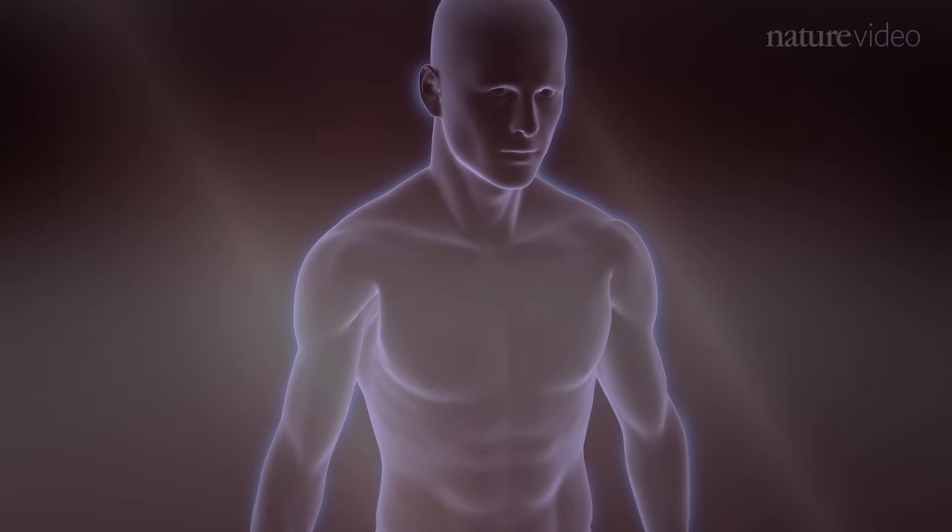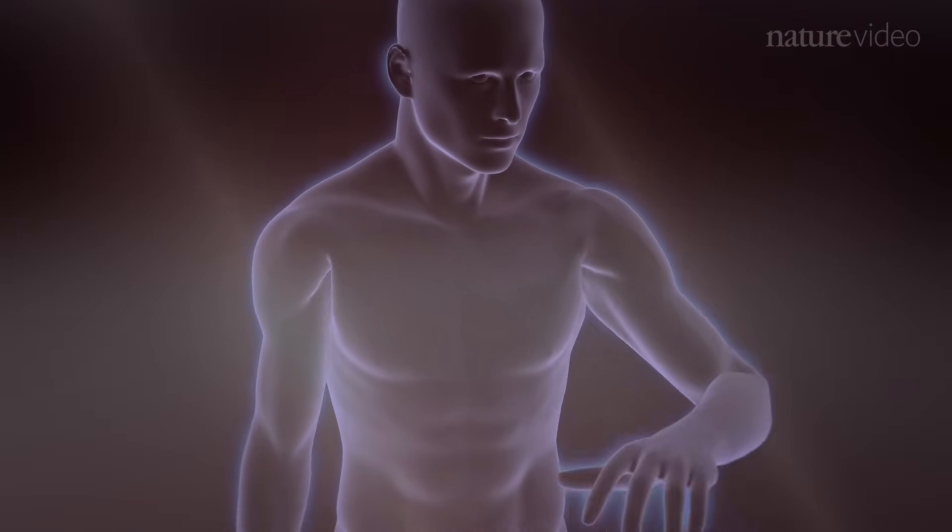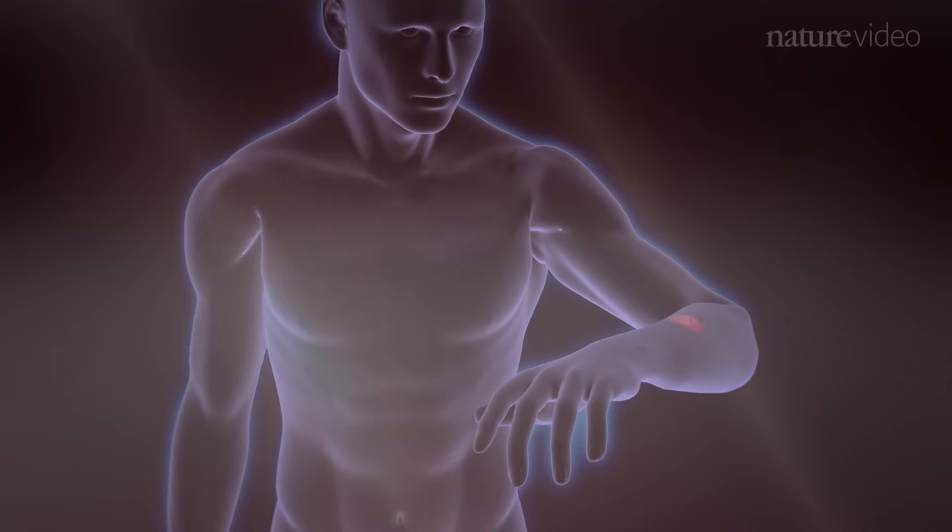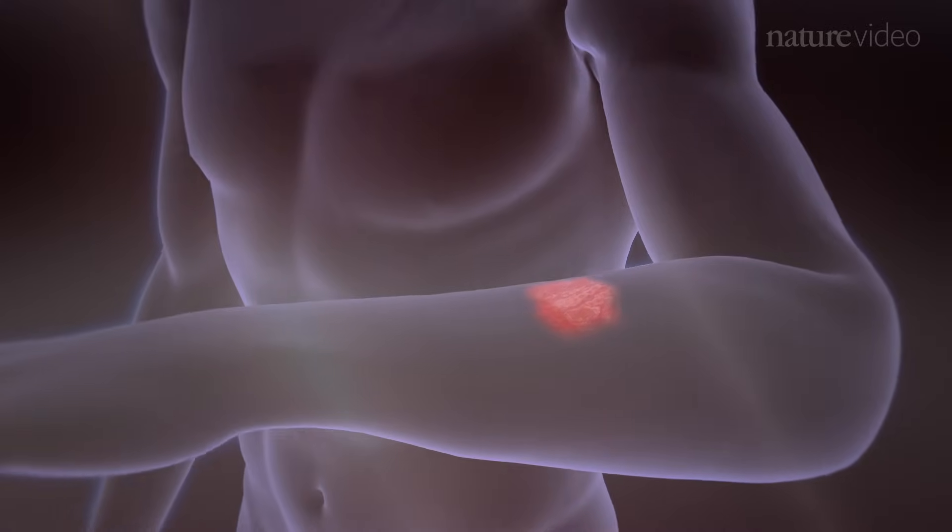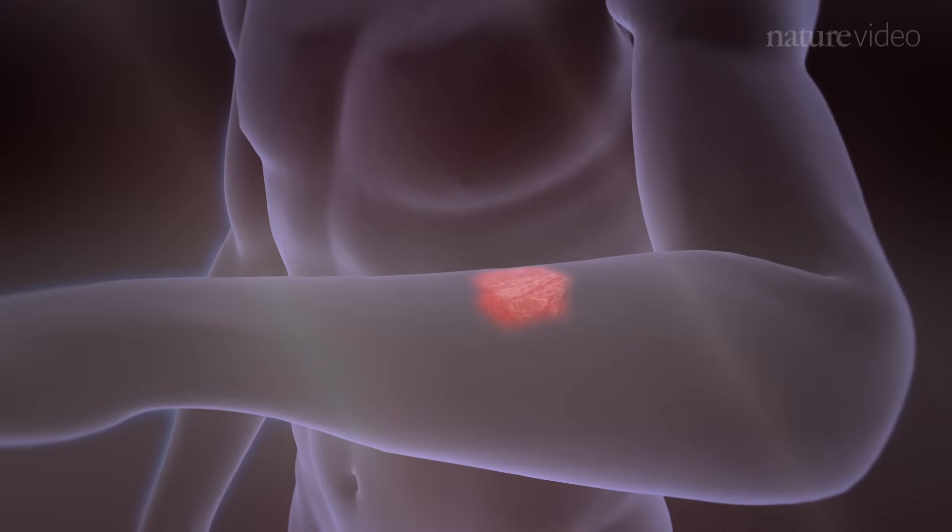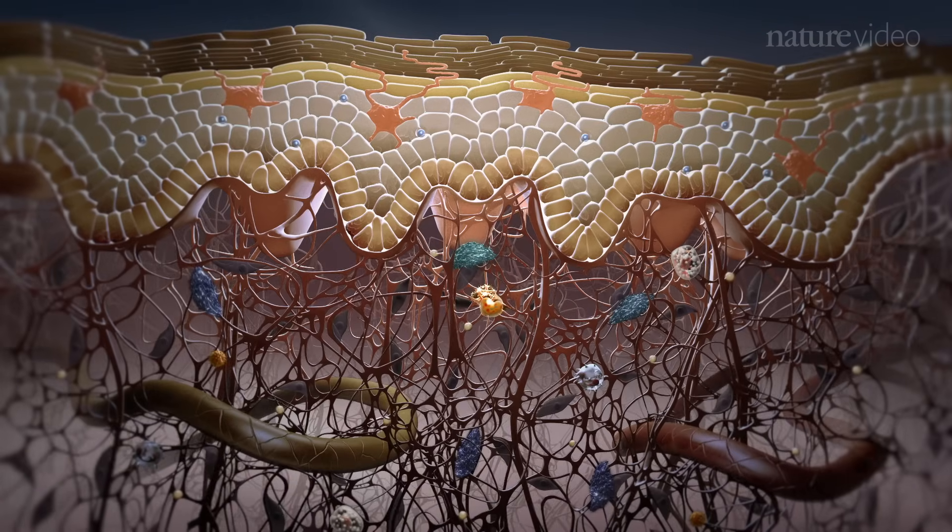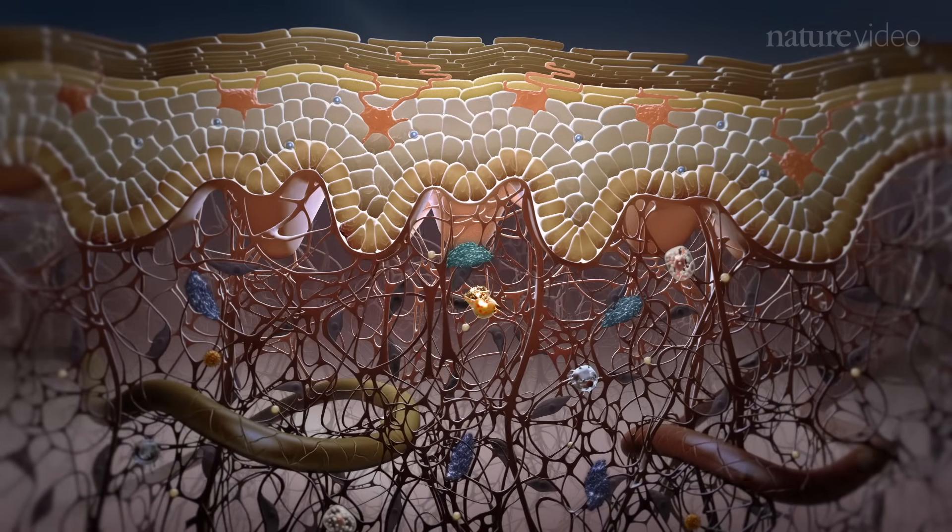Immune responses can become dysregulated and cause skin disorders such as psoriasis or atopic dermatitis. Psoriasis is a lifelong inflammatory skin disease characterized by scaly reddish plaques. A combination of environmental and genetic factors confers susceptibility to the disease.